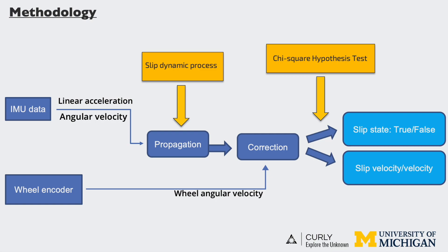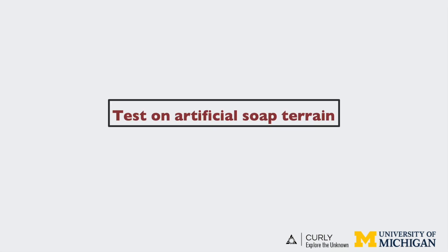Experimental results using a Husky wheeled robot confirm the mathematical derivation and validate the proposed estimator. The first experiment is on artificial soft terrain.